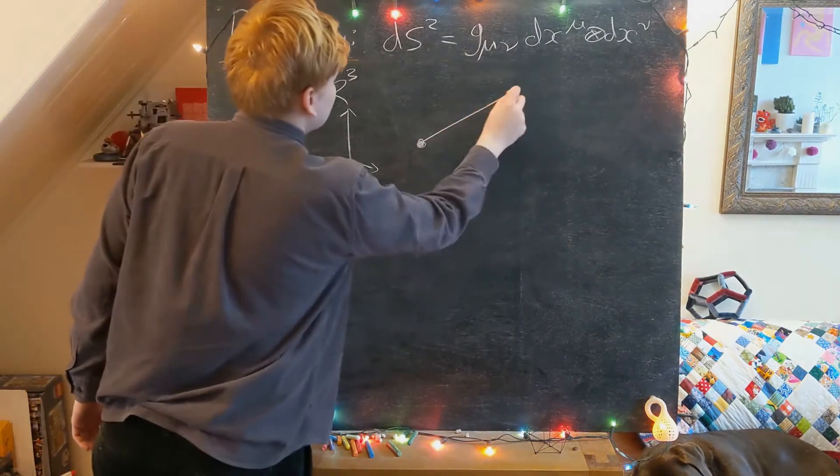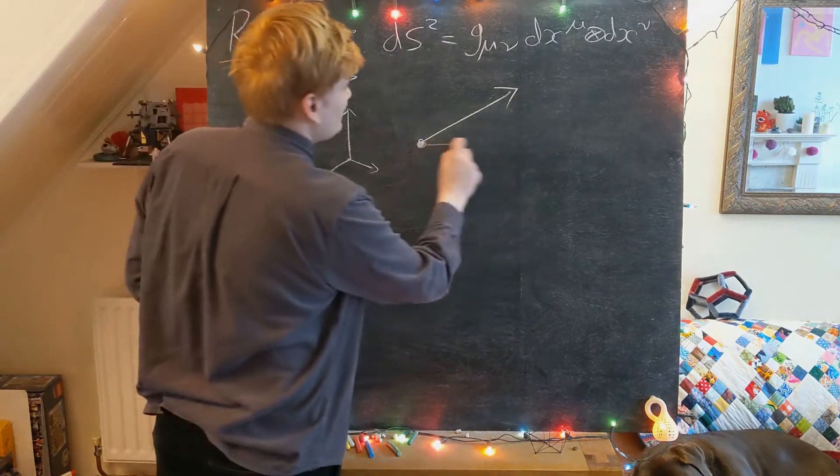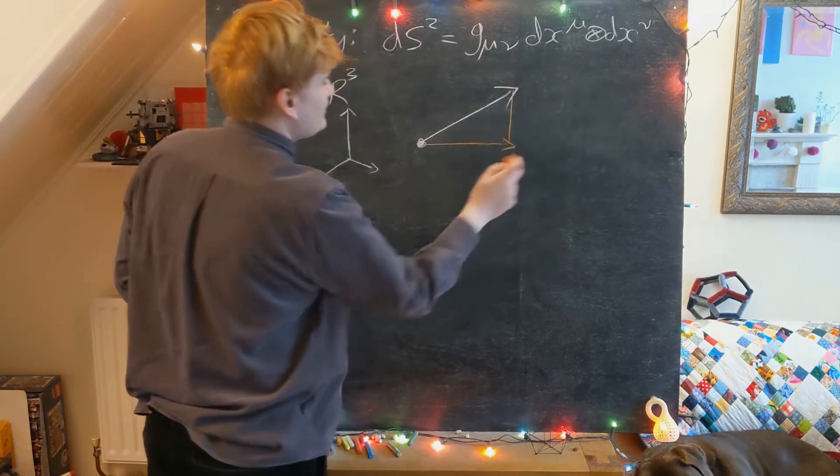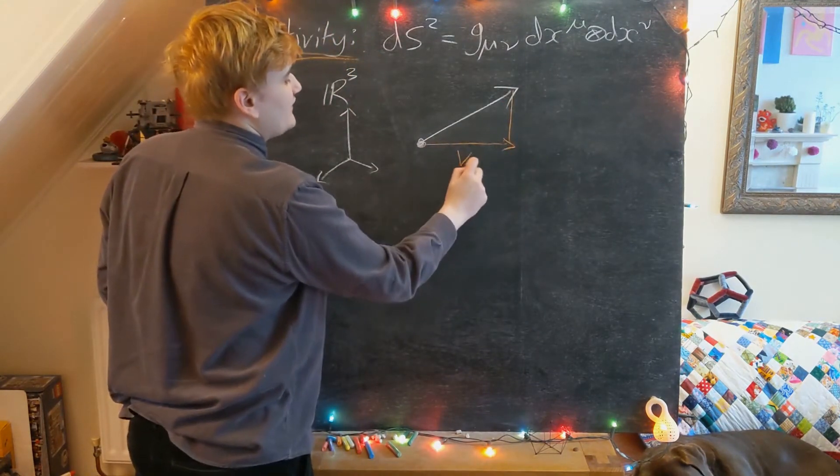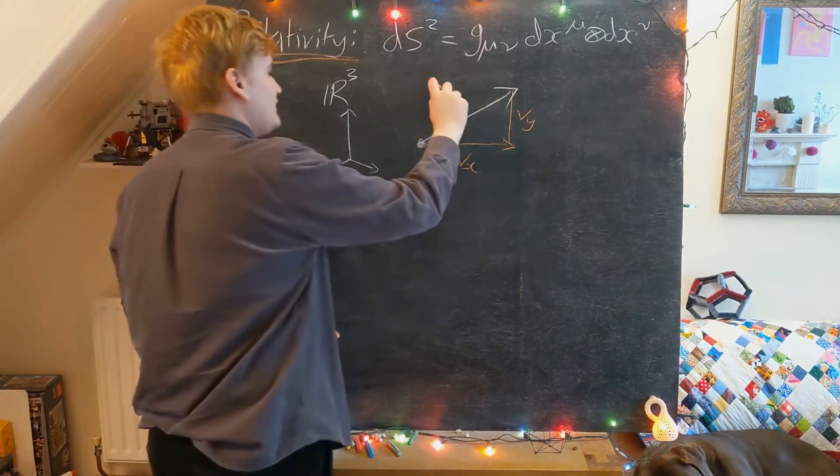Let's say this is our vector. It might have some set of components - let's say Vx, Vy, this is V.